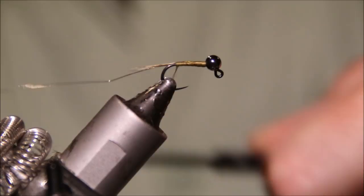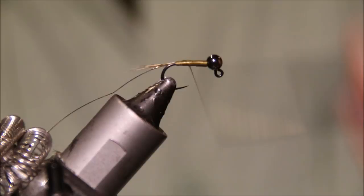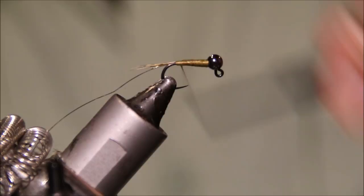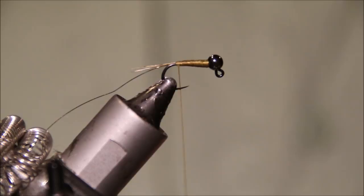Just tidy everything up and I'm going to build a little taper in the body. You don't really need to do this but I like to. So I'm just going to run the thread three-quarters of the way down and back to the bead, halfway down back to the bead, a quarter of the way down back to the bead, and then back to the bottom there.